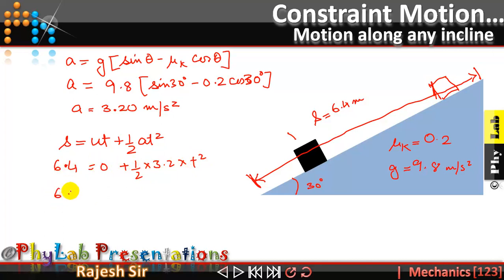Solving for t, 6.4 into 2 upon 3.2 is equals to t square, 3.2 and this goes as 2, therefore t comes out to be 2 seconds and that's the answer for this particular numerical.